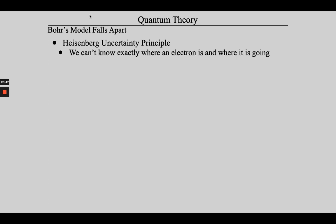Heisenberg, at the time, was one of the brightest mathematicians on the planet. Heisenberg read Bohr's data and was like, 'Bohr, here's the deal.' He actually wrote him a letter and said, 'Bohr, the problem is not with your research. Your experiments are good, your data is good. The problem is your understanding of electrons is wrong.' This is called the Heisenberg uncertainty principle. Heisenberg wrote to Bohr and said, 'We can't know exactly where an electron is and where it's going.'